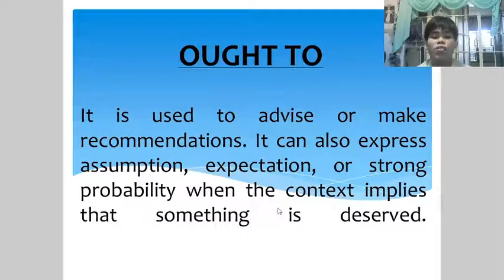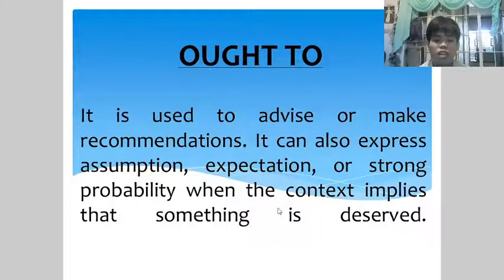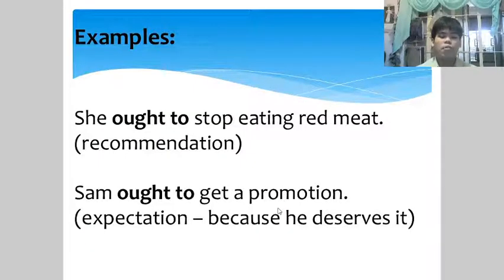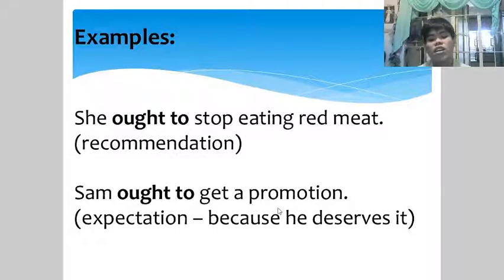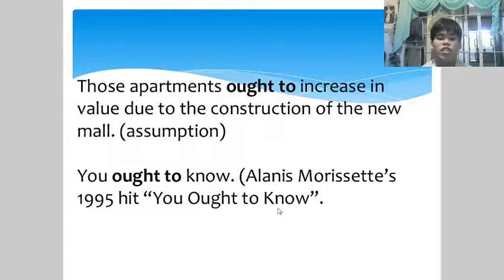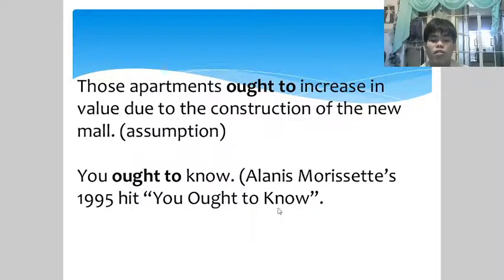'Ought to' is used to advise or make recommendations. It can also express assumption, expectation, or strong probability when the context implies something is deserved. Examples: 'She ought to stop eating red meat' — recommendation. 'She ought to get a promotion' — expectation. 'Sam ought to get a promotion because he deserves it.' 'Those apartments ought to increase in value due to the construction of the new mall' — assumption. 'You ought to know' — referencing Alanis Morissette's 1995 hit.